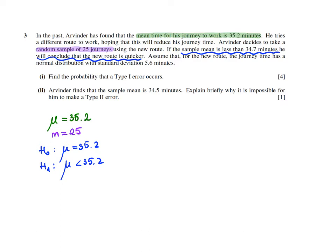Assume that for the new route, the journey time has a normal distribution with a standard deviation of 5.6 minutes. So the standard deviation is 5.6 minutes. Therefore, that's how I see his journey.